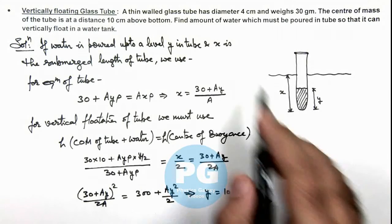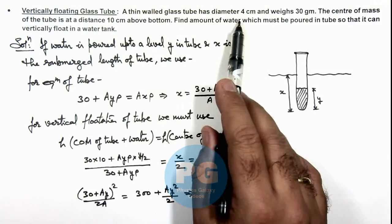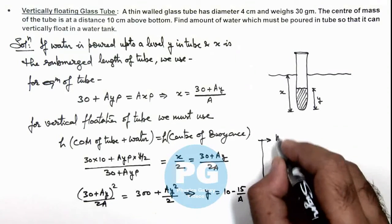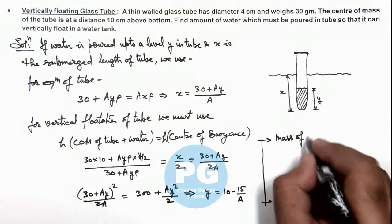And from here we are given that the glass tube has a diameter 4 centimeter then we can now write mass of.